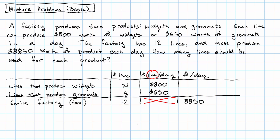Now, if we have W lines producing widgets and each of them makes $800 per day, we must be making $800W worth of widgets per day. Similarly, if we have G lines making grommets and each one makes $650 per day, then we must be making $650G dollars per day worth of grommets.